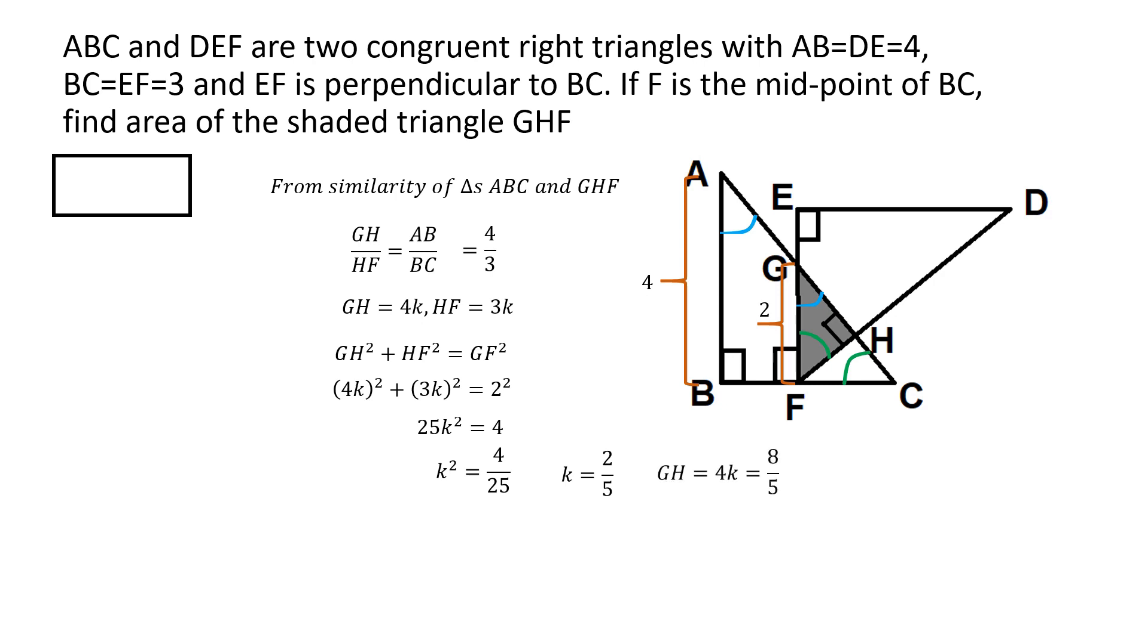So now we know what GH is. GH is 4K, and we know the value of the parameter K. So that makes GH equal to 8 by 5. And HF is 3K. And that makes HF equal to 6 by 5.